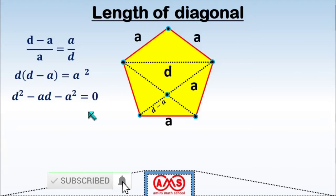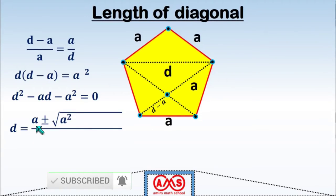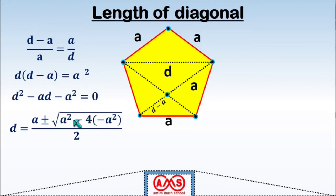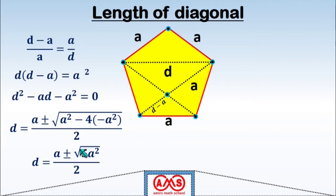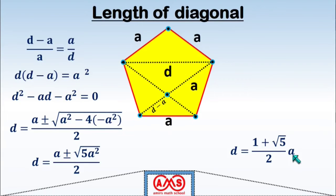Using the quadratic formula, we can solve for D. That is, D equals A plus or minus the square root of (A squared plus 4A squared) divided by 2, which simplifies to D equals (1 plus square root of 5) divided by 2, times A, where A is the length of side of the regular pentagon. So the length of the diagonal D equals (1 plus √5) / 2 times A.